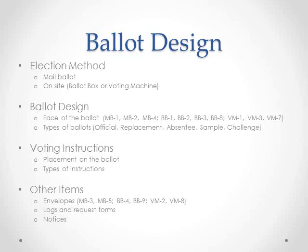For example, in a mail ballot election, you will need to draft the official ballot — with or without slates, as in MB-1 or MB-2 — but also replacement ballots for folks who claim not to have received them or made an error in filling out the ballot before returning it. For your two types of on-site elections, ballot box or voting machine, you'll need an official ballot as well as absentee ballots for folks who cannot attend the election for a legitimate reason, and challenge ballots for those who show up at the voting location but don't appear on your voter eligibility list but insist they should be able to vote.